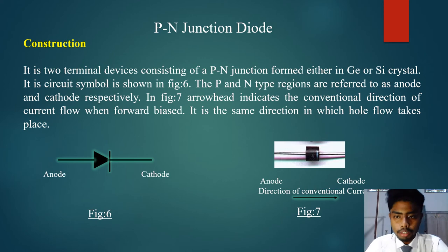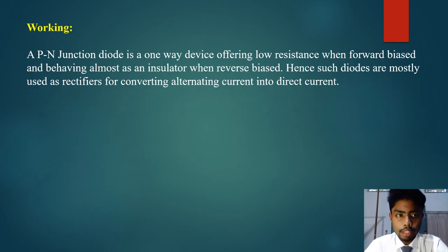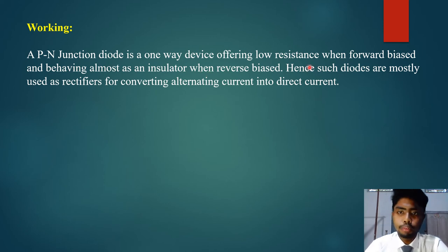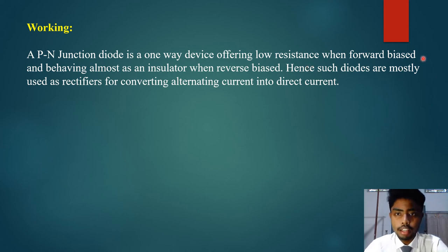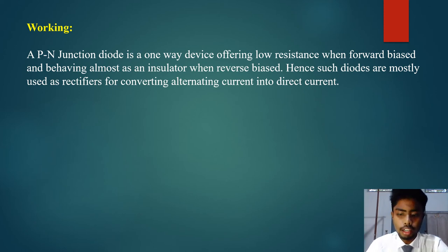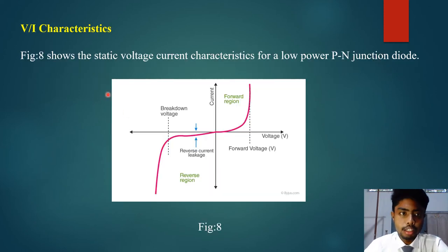A P-N junction diode is a one-way device offering low resistance when forward biased, and behaving almost as an insulator when reverse biased. When a P-N junction diode is connected in reverse bias, it acts like an insulator. Hence such diodes are mostly used as rectifiers for converting alternating current into direct current. We now turn to the next slide on the V-I characteristics of P-N junction diodes.